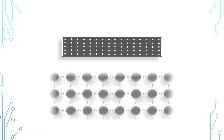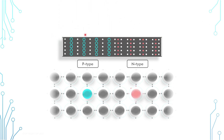Starting from an intrinsic semiconductor, we can dope one side of it to become P-type semiconductor and the other side to become N-type semiconductor. Basically, that means in the P region, some electrons are replaced by electron holes. Whereas in the N region, there are more electrons and these extra electrons are free-moving electrons. And there you go, this is how a P-N junction is created.